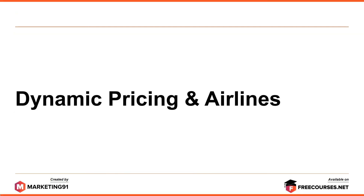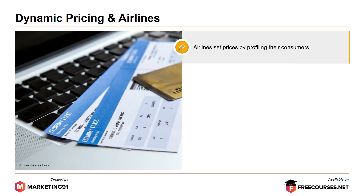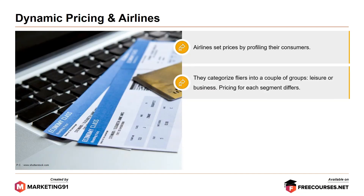Looking at dynamic pricing and the airline industry: airlines set up prices by profiling consumers. They categorize flyers into two groups — leisure or business — and pricing for each segment differs. Leisure passengers usually book in advance, so airlines tend to start prices for these seats relatively high, then adjust according to market response. For typical business routes, airlines start with low prices to fill minimum capacity, then increase prices steeply as corporate passengers tend to book last minute.